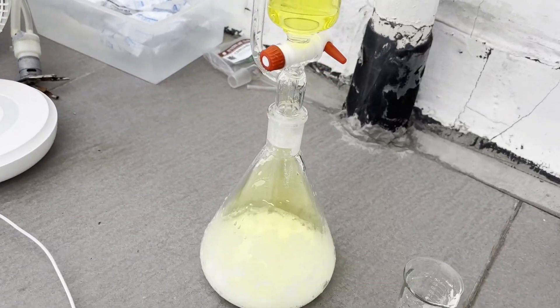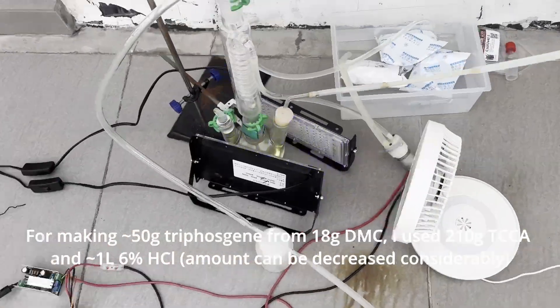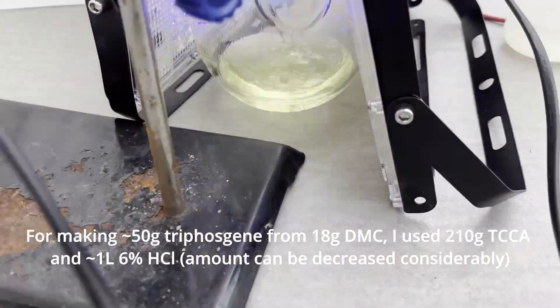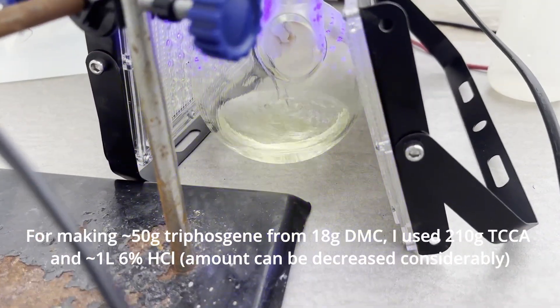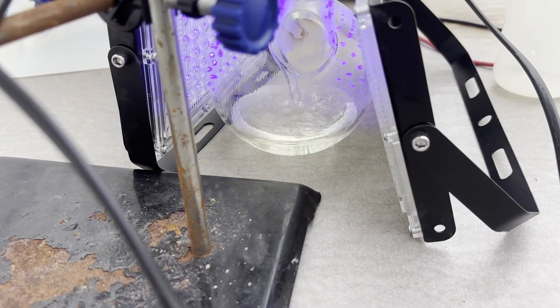In total, I spent around 210g of TCCA and a liter of the 6% hydrochloric acid to completely chlorinate the 18g of dimethyl carbonate and hopefully make 50g of triphosgene. This is honestly quite a lot of TCCA.